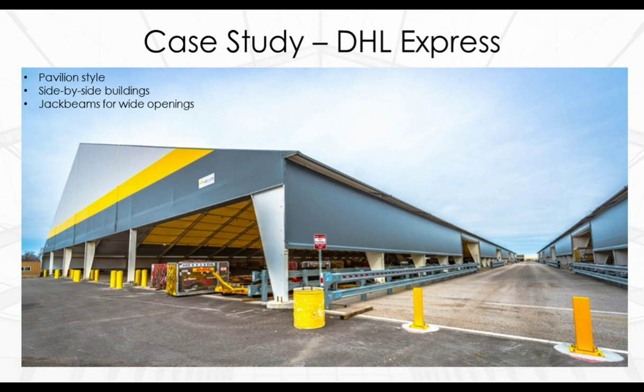These fabric buildings for DHL Express use jack beams to create wider sidewall openings for large equipment to pass between structures. The buildings are part of DHL Express's hub expansion at Cincinnati's Northern Kentucky International Airport, providing a place to store shipping containers protected from the elements. Both side-by-side buildings measure 205 feet wide by 580 feet long, with one side wall enclosed and remaining walls open for easy access. Fabric colors were chosen to match DHL's branding, with frames having a white primer finish, and Legacy crews installed the buildings on a tight timeline.